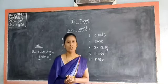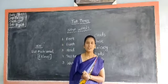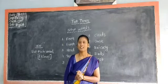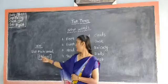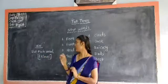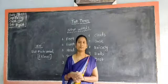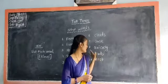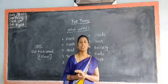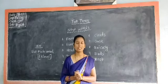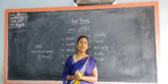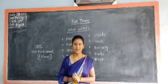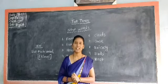That was all about today's class. Now let us move towards today's homework. You have to read and write these ten new words five times each in your notebook. Also read the poem once. Okay children, thank you.